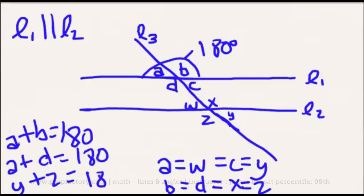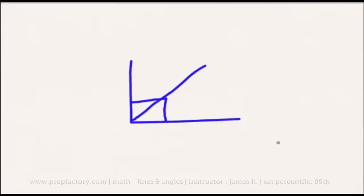Another thing to know — it won't come up nearly as often on the SAT as supplementary angles — but it is what we call a complementary angle. The complementary angle is quite simple: if supplementary angles add up to equal 180 degrees, complementary angles add up to equal 90 degrees. Just an important definition to remember, not nearly as important as supplementary angles, but potentially important.